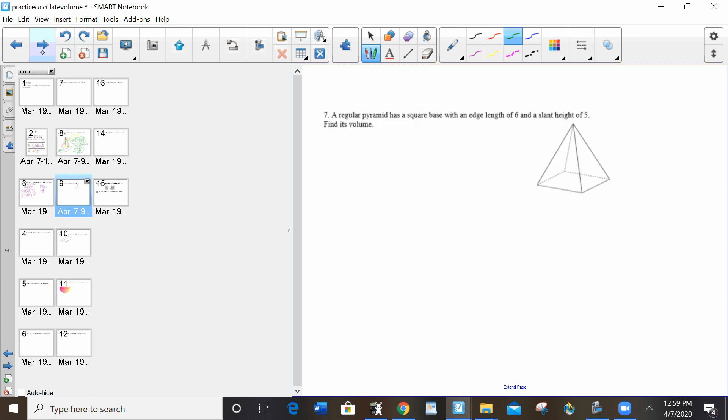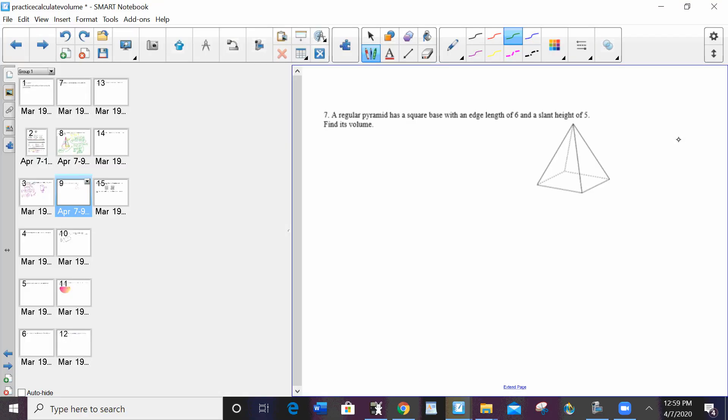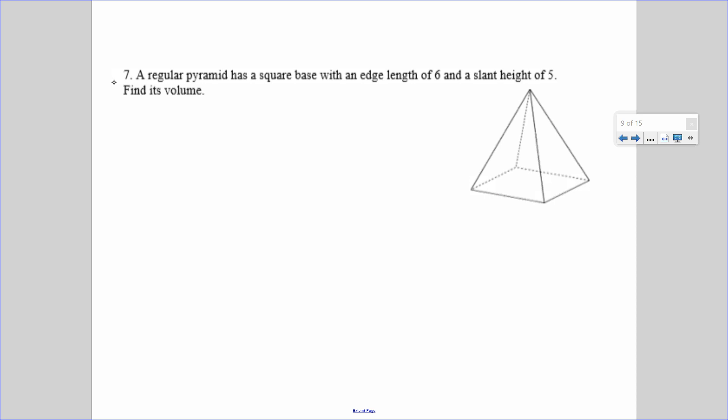So number seven is very similar. I'm going to let you try it on your own. I'll just kind of get it set up for you. A regular pyramid has a square base with an edge length of 6. So again, if it's a square base, then both the length and the width are 6, and a slant height of 5. So I want the height. That's 3. The slant height is 5. So I'm going to have to find the height using Pythagorean theorem.